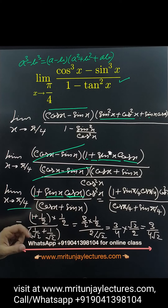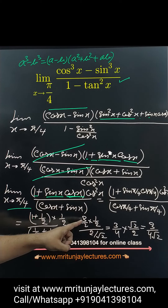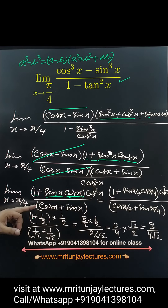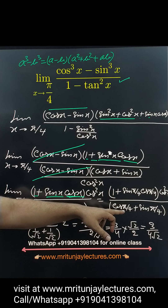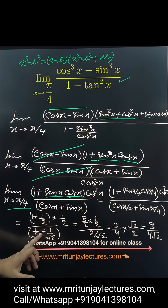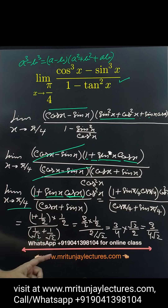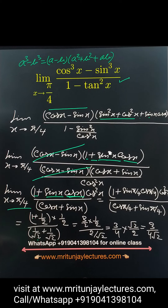So that gives 1/2. Taking LCM, the numerator becomes 3/2 into 1/2, which equals 3/4. Divided by cos(π/4) which is 1/√2, and the other cos(π/4) is also 1/√2, giving 2 upon root 2. So the final answer is 3 upon 4√2.